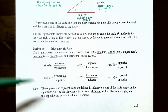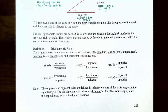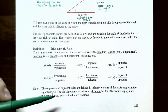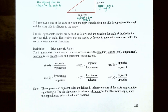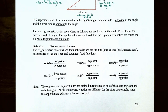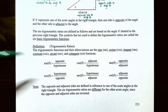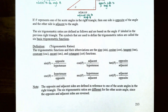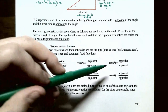Keep in mind that the opposite and adjacent sides are defined in reference to one of the acute angles. If you change theta to the other acute angle, the opposite and adjacent sides are reversed, but the hypotenuse is always across from the right angle. An easy way to remember the first three ratios is the acronym SOHCAHTOA: Sine is Opposite over Hypotenuse, Cosine is Adjacent over Hypotenuse, and Tangent is Opposite over Adjacent.